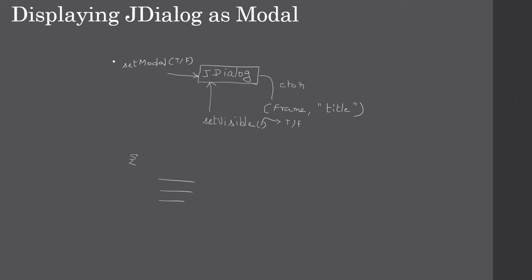If we call setModal and then setVisible, once setVisible is called the code execution will block at that point until the user closes the dialogue. Once the user closes the dialogue, control will resume from where setVisible was called. So setVisible acts as a blocking call and resumes once the user dismisses the dialogue.